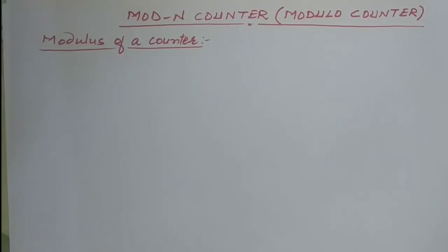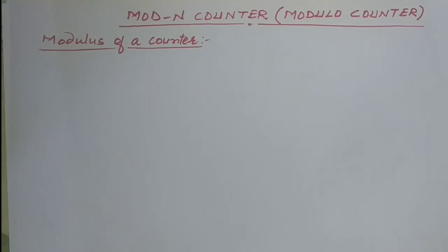Today we will discuss mode-N counters in the context of synchronous counters, also known as modulo counters. Before this, we learned about 2-bit synchronous counters and other counters that exhaust all their states — completing their cycles like 0, 1, 2, 3, then back to 0. Similarly, a 3-bit counter counts from 0 to 7, and a 4-bit synchronous counter counts from 0 to 15. All combinations are fully exhausted in those counters.